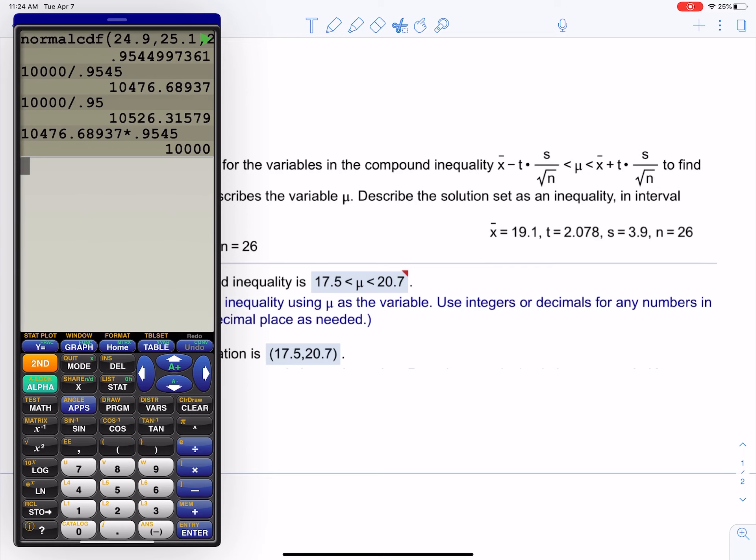Alright, so first: 19.1 minus t. What's t? 2.078. Times—now you have s divided by square root of n. So s is 3.9 divided by square root of n, which is 26. And that's it for the left-hand side. We're getting 17.51 is less than μ, which is less than...